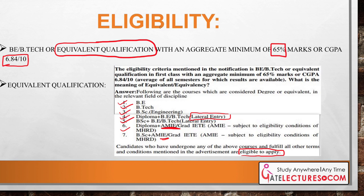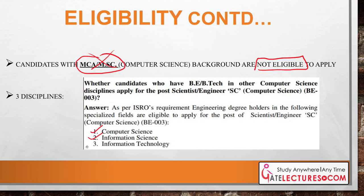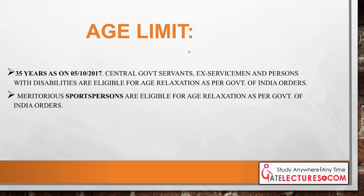Students who have done MCA or M.Sc are not eligible to appear for this ISRO examination. There are three disciplines considered under computer science: Computer Science, Information Science, and Information Technology. Students from IT branches sometimes get confused and think they cannot apply, but if you are from any of these three branches, you will be able to apply for this Scientist Engineer SC vacancy.